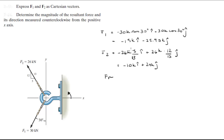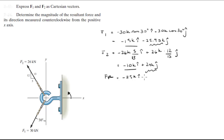When you add this up, you add the x-components with the x-components and the y's with the y's, and you get that the resultant force is negative 25k in the i-direction minus 2k in the j-direction. They almost cancel out along the y-axis.